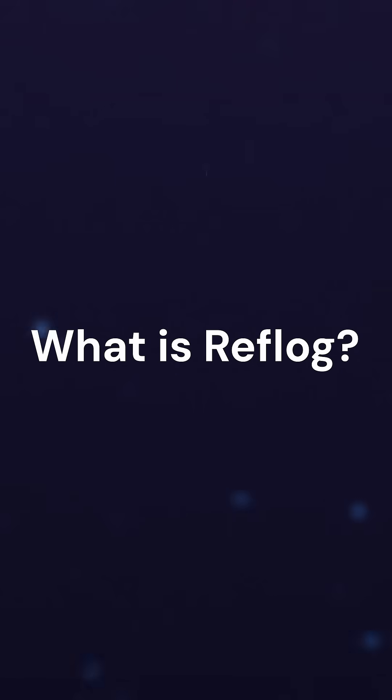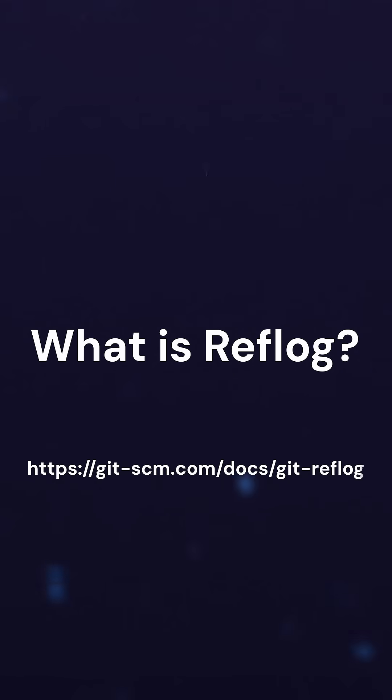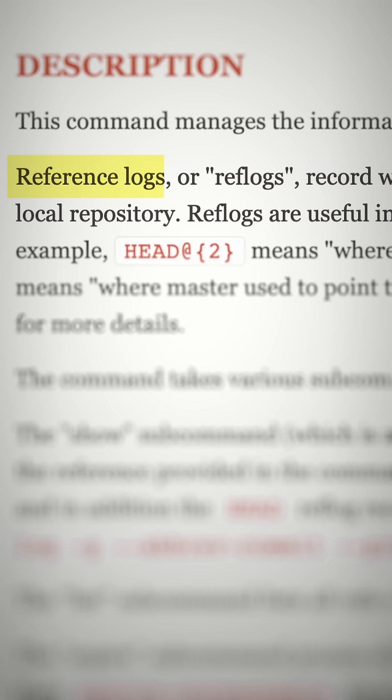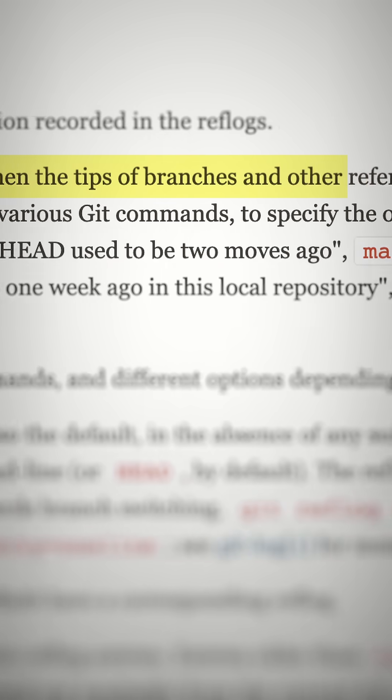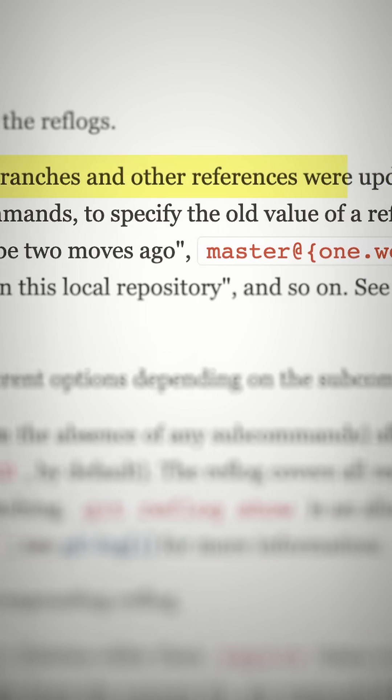So what is reflog? Well, the definition from git SCM is: reference logs, or reflog, records the tip of branches and other references whenever they are updated. Or in layman's terms, reflog tracks the changes of a branch or other references — other references being HEAD. This means as you move your HEAD around from branch to branch or from commit to commit, it tracks every last little step.